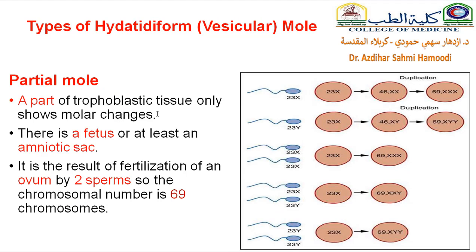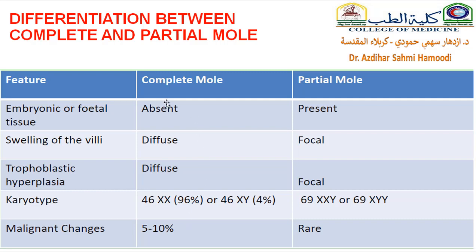In partial mole, part of the trophoblast tissue shows molar changes, and the other part will be a fetus or sometimes only an amniotic sac without a fetus. The fertilization here involves one sperm that duplicates inside the ovum, or two sperms that hit an ovum already containing 23 chromosomes, so the end result is always 69 chromosomes, which is abnormal. The comparison between complete and partial mole shows that malignant changes in complete mole reach up to 15%, while in partial mole they are very rare — only 1 to 2%.